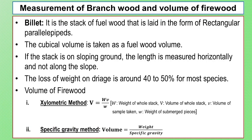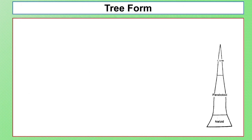For the volume of firewood, there are two methods: the Xylometric method and the Specific Gravity method. In the Xylometric method: V equals (W times v) divided by w, where capital W is the weight of the whole stack, v is the volume of the sample taken, and small w is the weight of the submerged species.